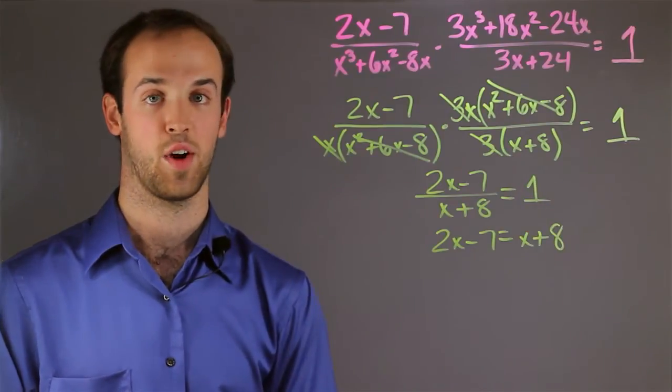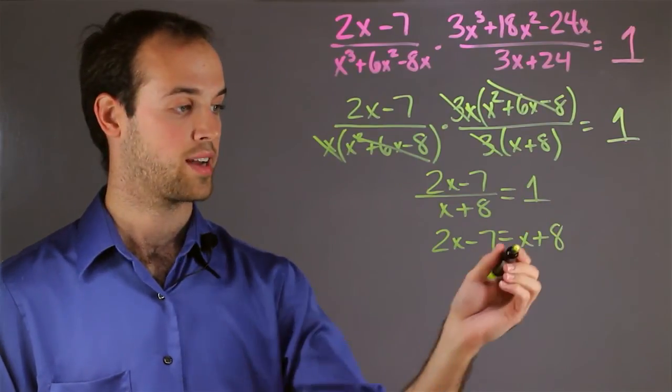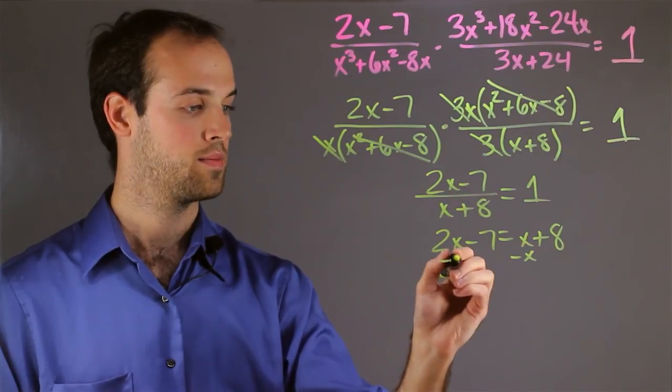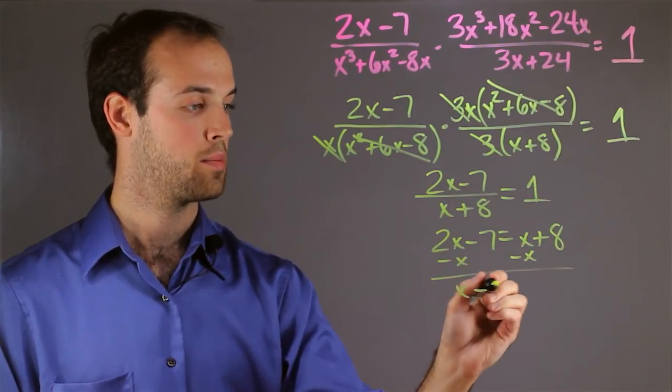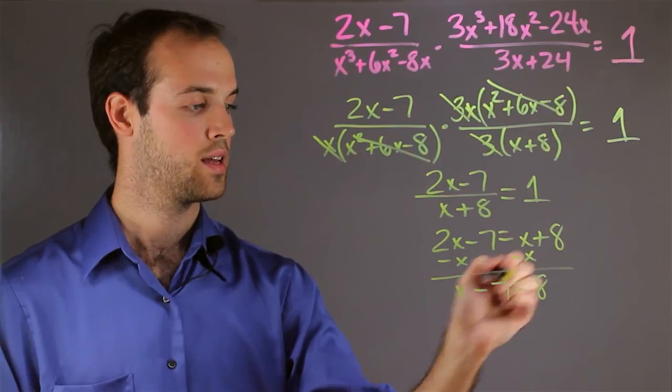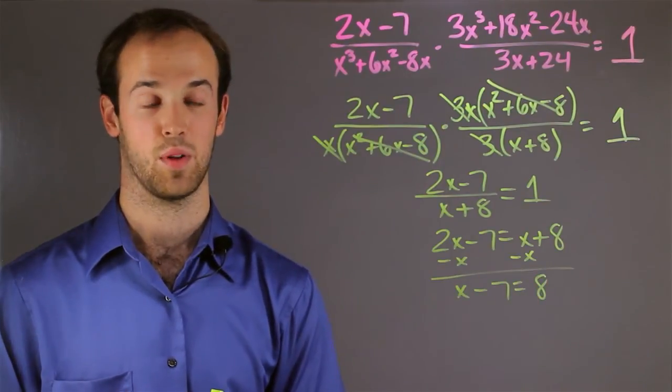And from here it's very easy to solve. I'm going to subtract x from both sides, which leaves me with x minus 7 equals 8, and then simply add 7 to both sides.